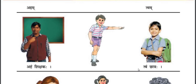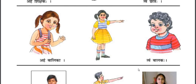Now Aham and Twam — both are pronouns. Aham means 'I,' related with First Person. Twam means 'You,' related with Second Person. Aham Shikshakah — I am a teacher. Twam Chhatraha — you are a student. Aham Balika — I am a girl. Twam Balakah — you are a boy.